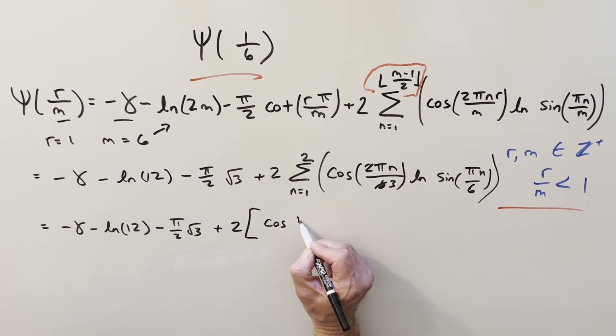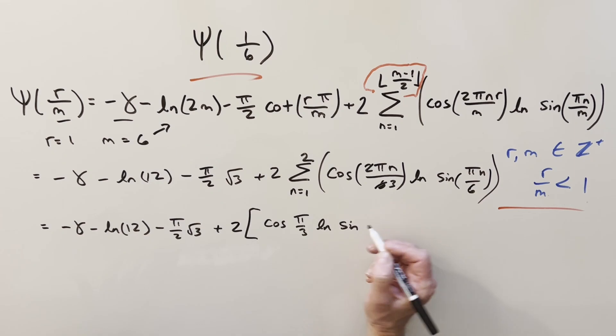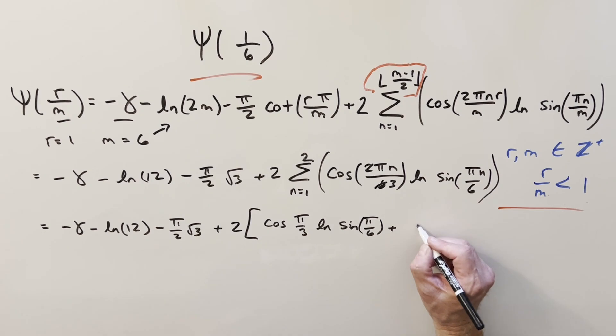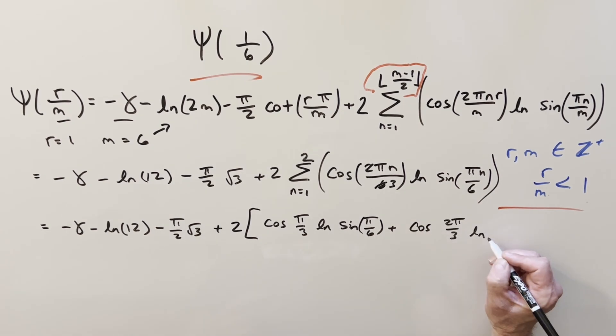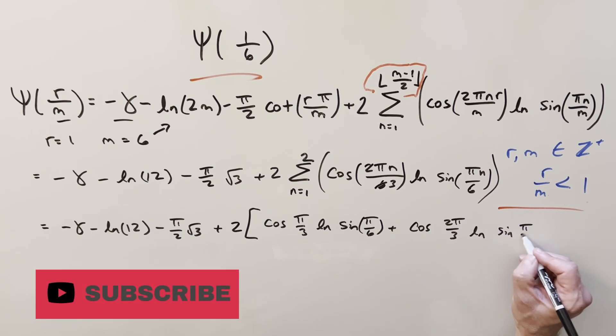we have cosine just pi over 3 times natural log sine of, when n is 1, this is just going to be sine pi over 6 here. And then for the second term, when n equals 2, we end up with cosine 2 pi over 3 natural log sine pi over 3.